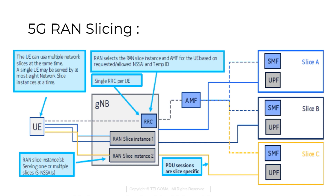The establishment of a PDU session within a selected instance is triggered when the AMF — Access and Mobility Function — receives a session management message from a UE. To enable differentiated handling of traffic for network slices, NG-RAN is pre-configured with a set of different configurations for network slices, such as RAN slice instance one and RAN slice instance two.